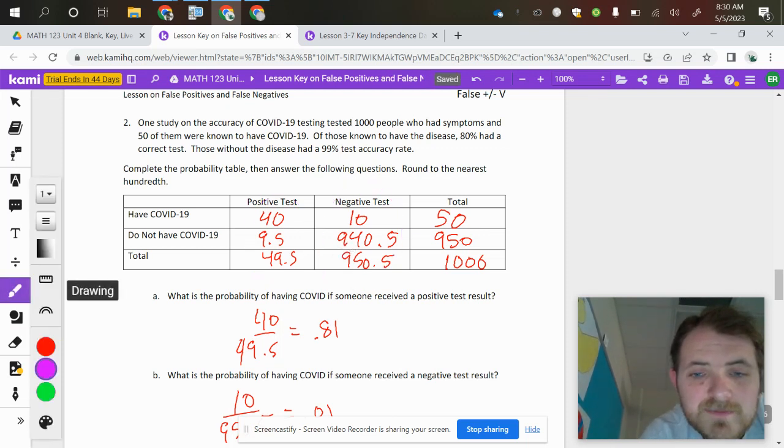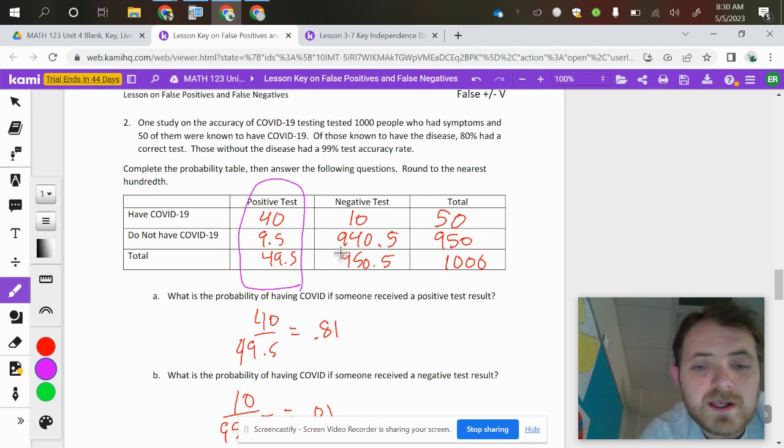So that means I'm looking at the positive chart. The people that tested positive is 49.5, making that division, that probability, 0.81.